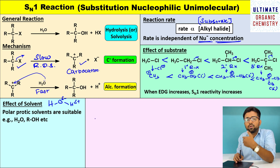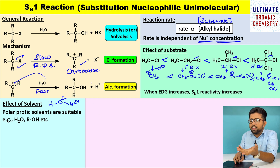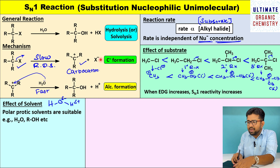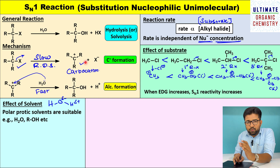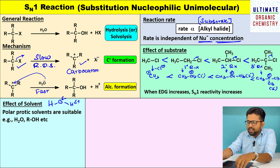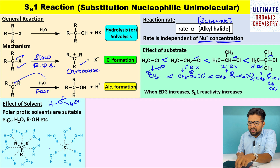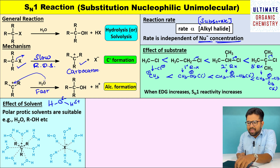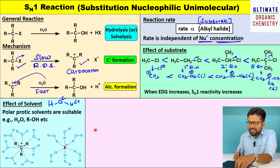The reason for using polar protic solvents again comes from the rate determining step. If you look at the rate determining step, a cation and an anion — that is an ion pair — is formed. Whatever solvent you use in this reaction, that solvent should be capable of stabilizing both the cation as well as the anion.